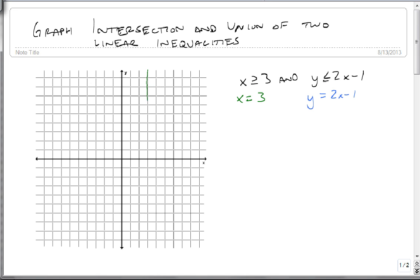We draw a line at x equals 3, a vertical line right here. Then we plug in 0 and ask: is 0 greater than or equal to 3? Since that's false, we shade away from the origin. So this line would shade this region right here.